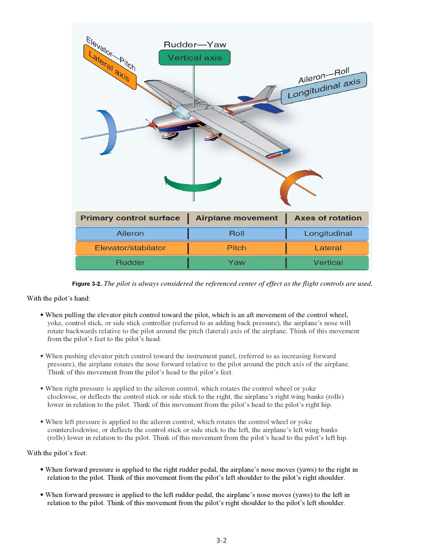With the pilot's feet: when forward pressure is applied to the right rudder pedal, the airplane's nose moves (yaws) to the right in relation to the pilot. Think of this movement from the pilot's left shoulder to the pilot's right shoulder. When forward pressure is applied to the left rudder pedal, the airplane's nose moves (yaws) to the left in relation to the pilot. Think of this movement from the pilot's right shoulder to the pilot's left shoulder.